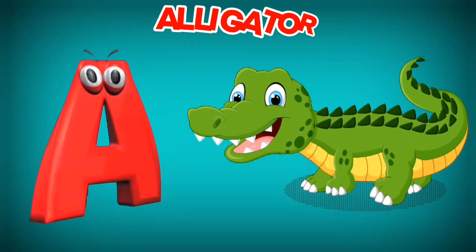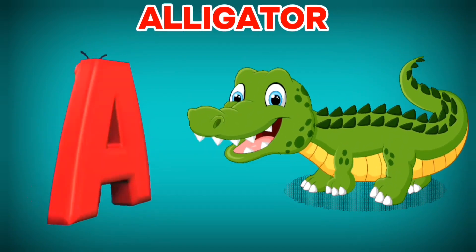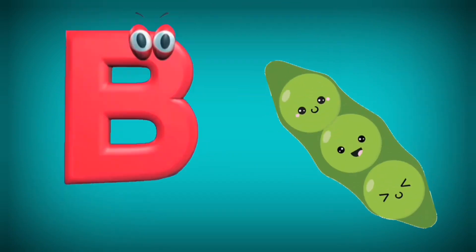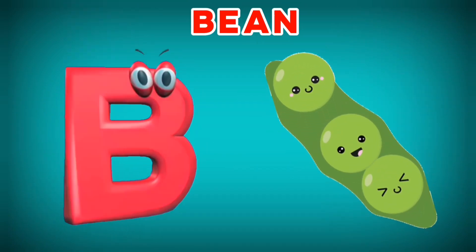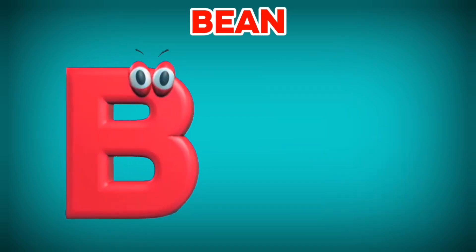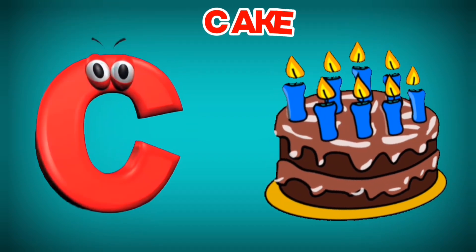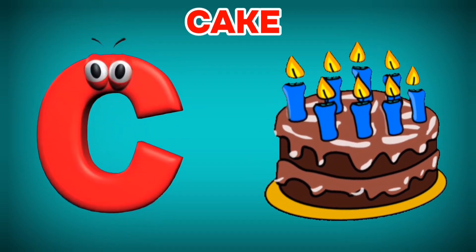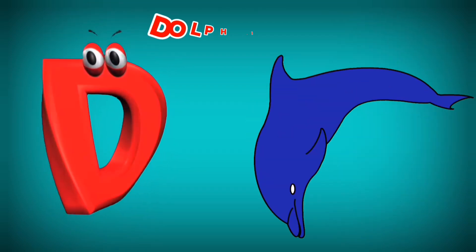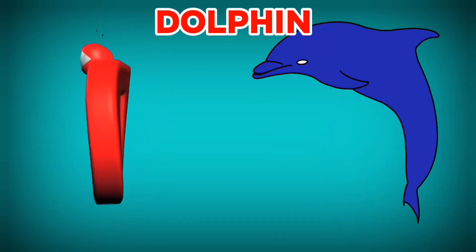A is for Alligator. A, A. Alligator. B is for Bean. B, B. Bean. C is for Cake. C, C. Cake. D is for Dolphin. D, D. Dolphin.